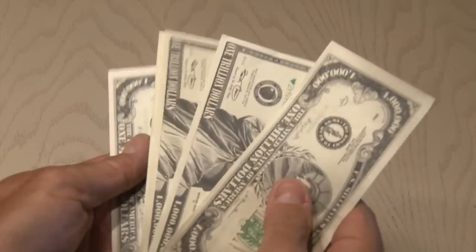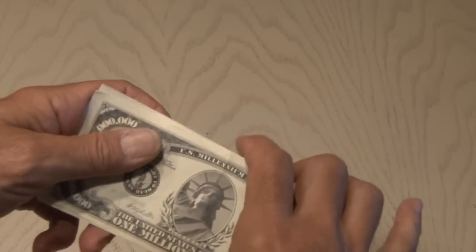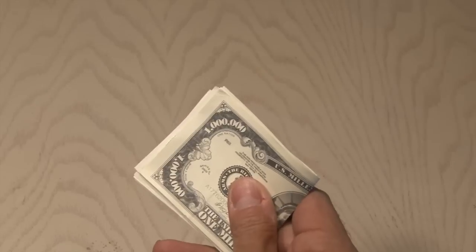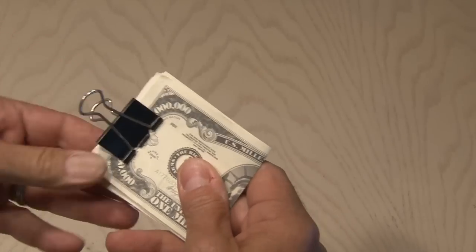Have you got a few million dollars laying around and you can't afford a wallet? A binder clip is a quick and easy way to hold them together, and now you've got a poor man's money clip.